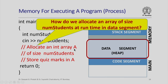Now we must figure out how to allocate an array of size numstudents at runtime in the data segment. From the constructs of C++ we have seen so far, there is nothing that would allow us to do this. All the variables and arrays were allocated statically in the activation record in the stack segment when the function was called. We could not allocate memory once the function started executing, but now we actually need to do that.